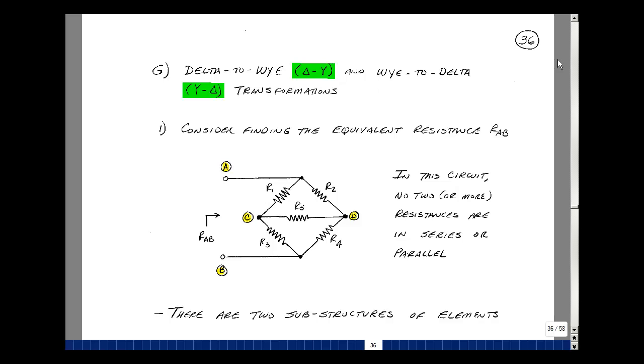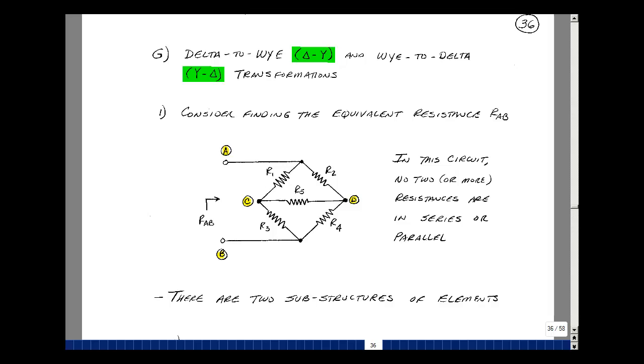Consider the following interconnection of parts. We're going to call this a bridge later on in the course. Here I've got five resistances interconnected. What's interesting about this structure is that no two resistances are in series or in parallel. To be in series, you have to share the same current. This is not in series with this because I've got this element hooked up here. This is not in parallel with this because there's an element in between. I have to share the same two nodes.